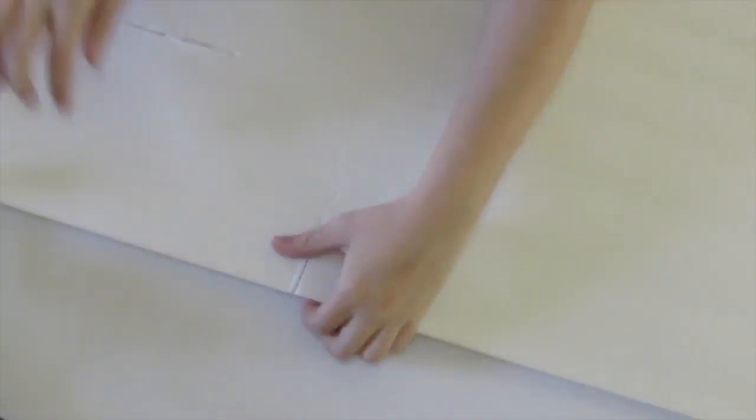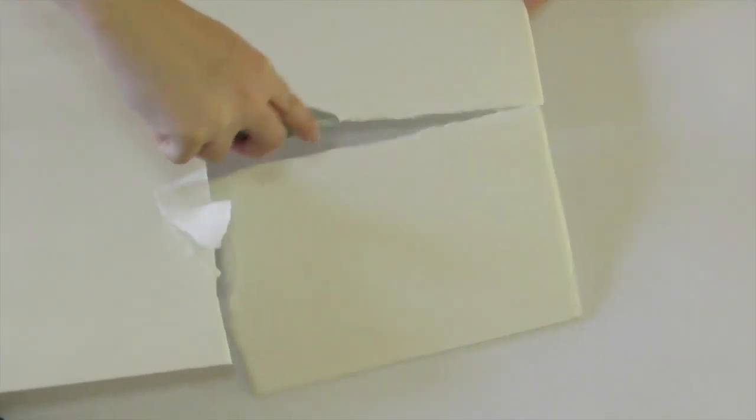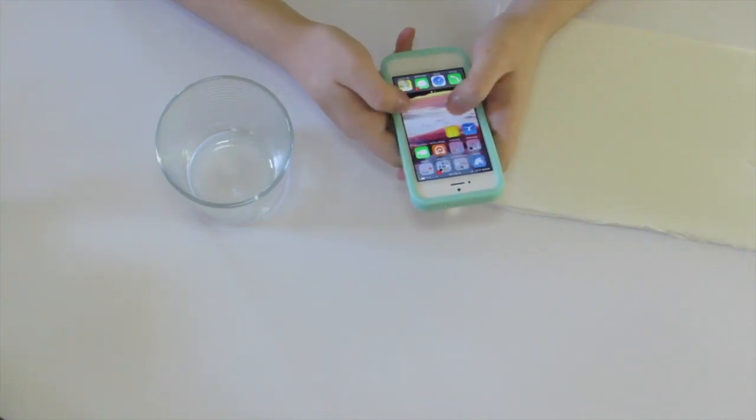Start out by cutting a rectangle off the corner of the poster board. This is all we'll be using. I found it was easier and more precise to use an exacto knife to cut this material.